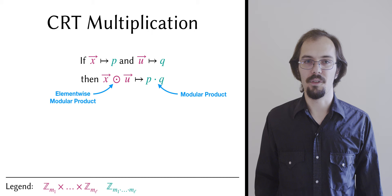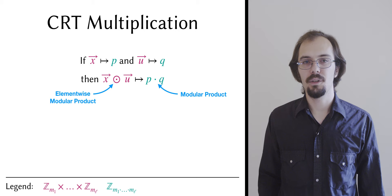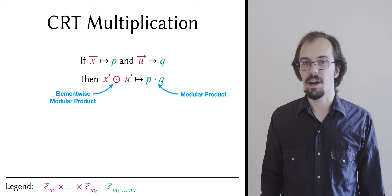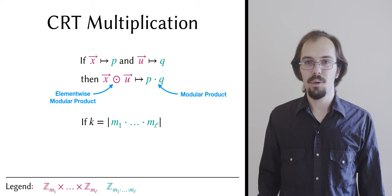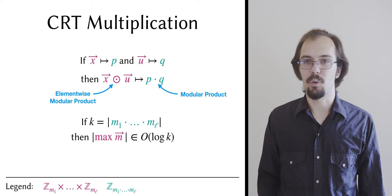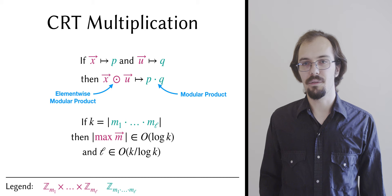This means that if we want the standard form product of p and q, we can multiply the CRT form values x and u element by element, then evaluate the mapping, instead of evaluating the mapping before multiplication. We can show that if a primordial number has k bits, then the length of the largest prime in the corresponding primordial vector is an O of log k, and also that L, the length of the primordial vector, is an O of k over log k.